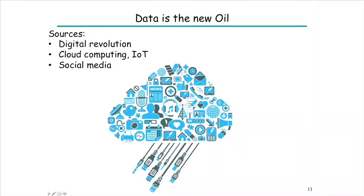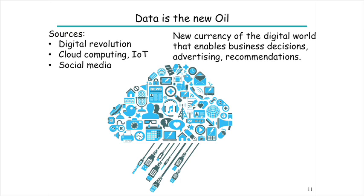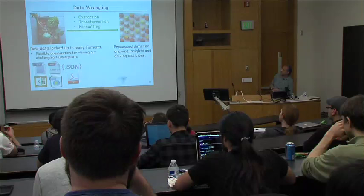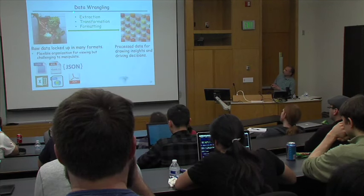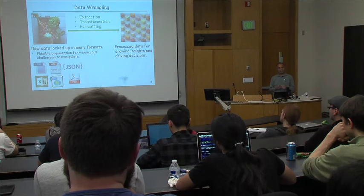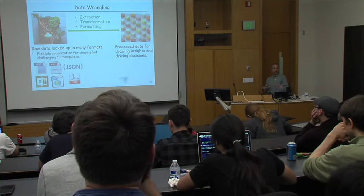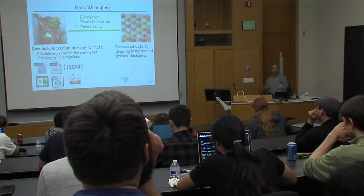We went from syntactic string transformations to more semantic string transformations. More generally in the space of data manipulation, there are lots of transformations people want to do to massage data coming from social media and cloud computing, which is present in raw semi-structured format. The different kinds of tasks in the broad space of data wrangling include extraction of key items from web pages or log files, transformations of the kind I've shown, and formatting transformations to prepare data in a more presentable form.